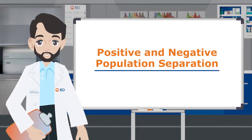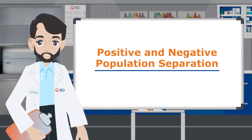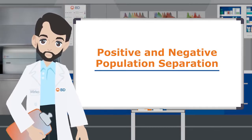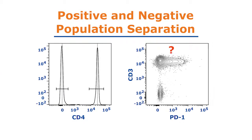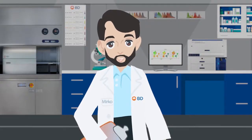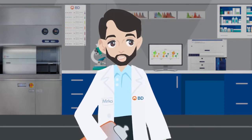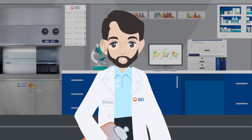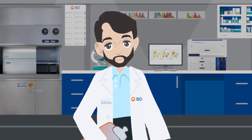While separation between a positive and negative population may be obvious for clearly separated markers like CD4, setting gates for dimly positive cells may be challenging. In this video we will review the most appropriate controls required to account for different sources of background and to correctly set gates.